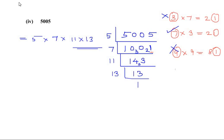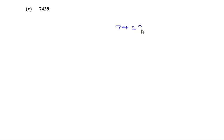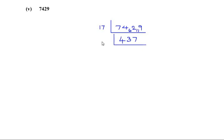Now let us look at the last sub-part: 7429. This goes in the table of 17 — I have already tried 3, 7, 9, 11, and 13 and they did not work out. 17 times 437 gives us 7429. The next number 437 goes in the table of 19: 19 times 23 gives 437.